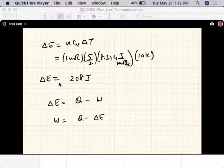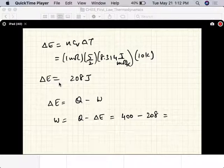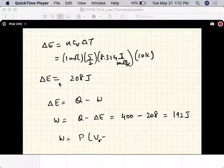W equals Q minus Delta E equals 400 joules minus 208 joules. That's how much work was done, and the work done is P times V_final minus V_initial.